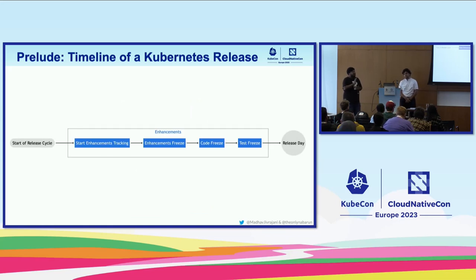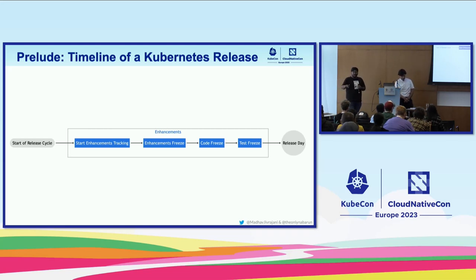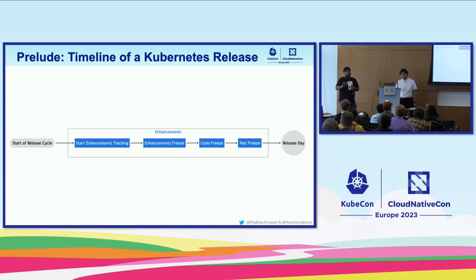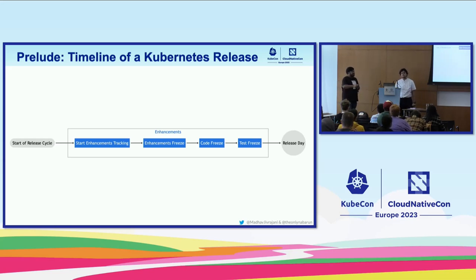Enhancements — at the start of the release cycle, we begin collecting features that should be delivered in the release. Beyond about a month, we freeze the requirements — we don't let anyone add new features. This ensures we do what we sign up for and don't burn ourselves out. Then we have code freeze where the code is frozen; you can't commit anything beyond that point. This gives us almost a month or five weeks to test the releases and ensure reliability.